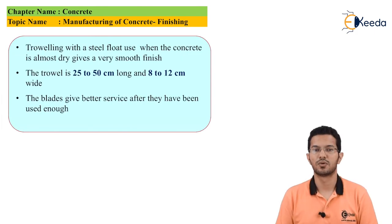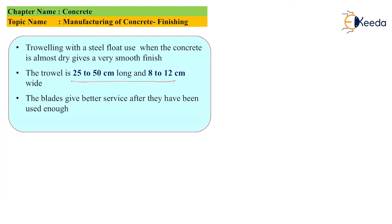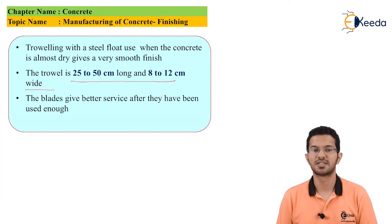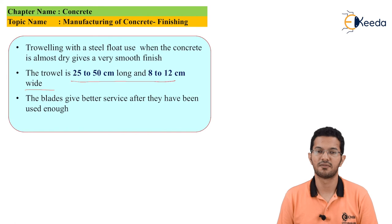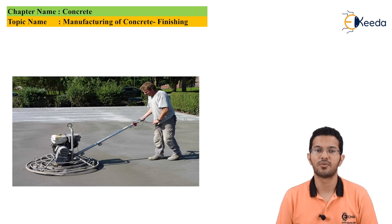Trowelling with a steel float, used when the concrete is almost dry, gives a very smooth finish. The trowel is 25 to 50 centimeters long and 8 to 12 centimeters wide. The blades give better service after they have been used sufficiently. The power trowels are fairly simple in their design and operation, but as an operator of any type of equipment, it is important to know the key components, how they work and why.